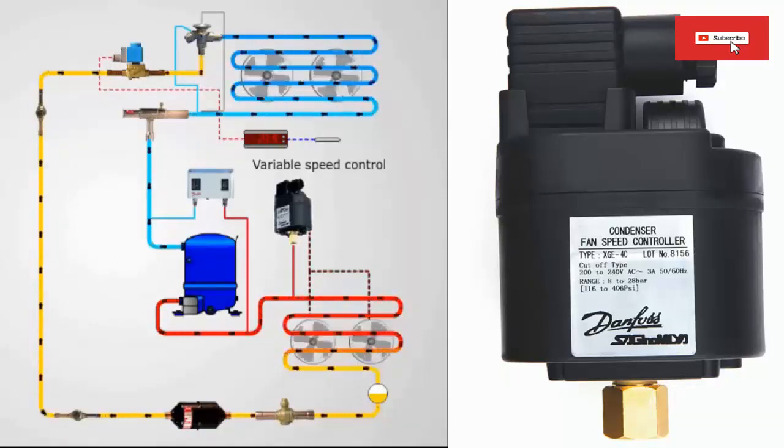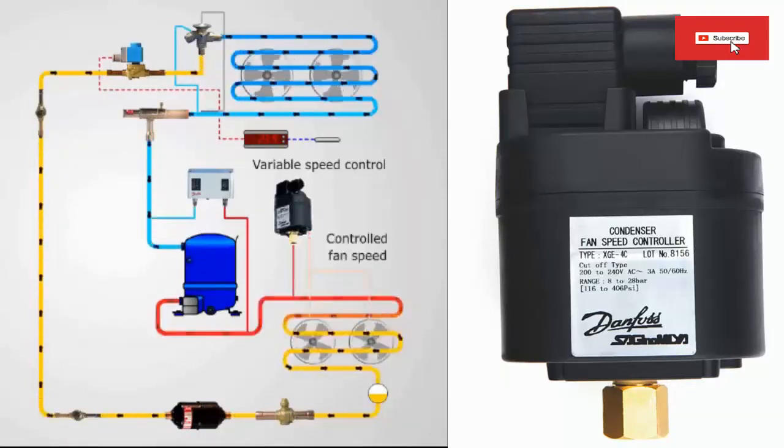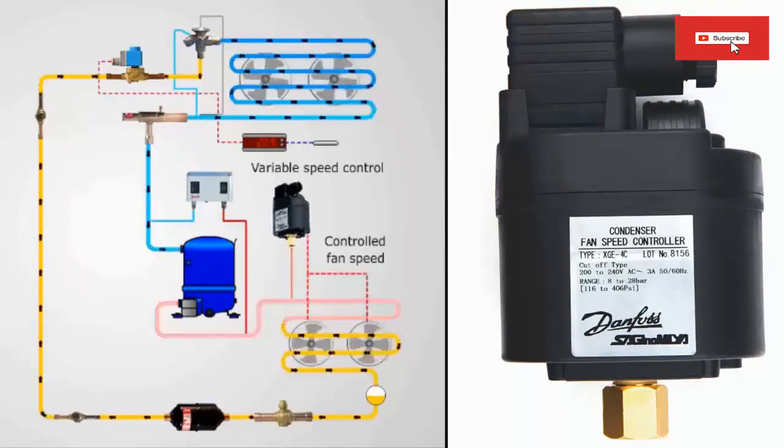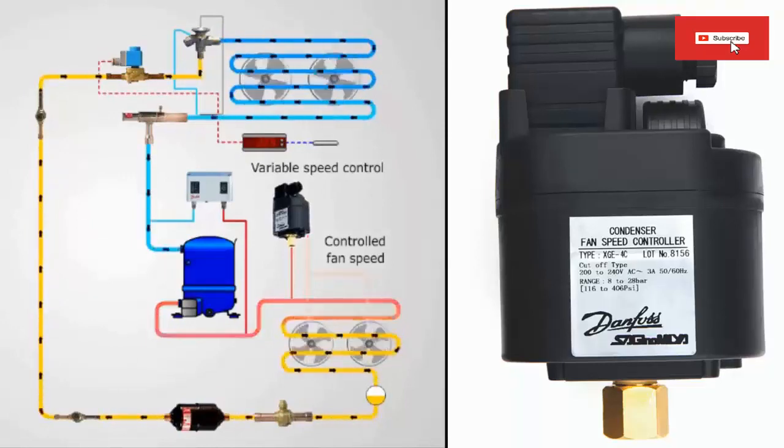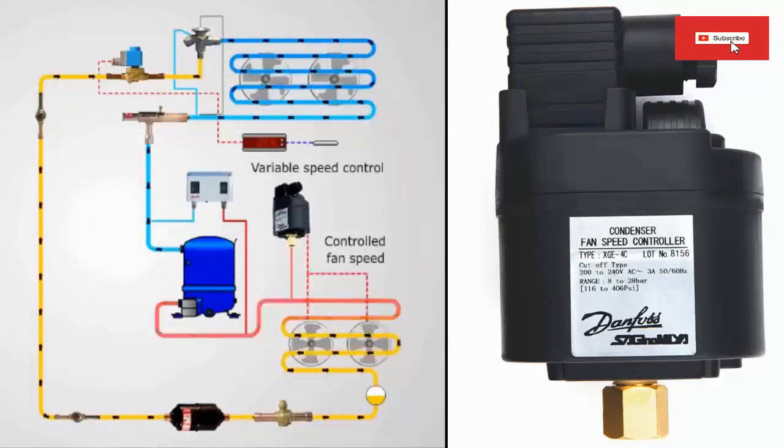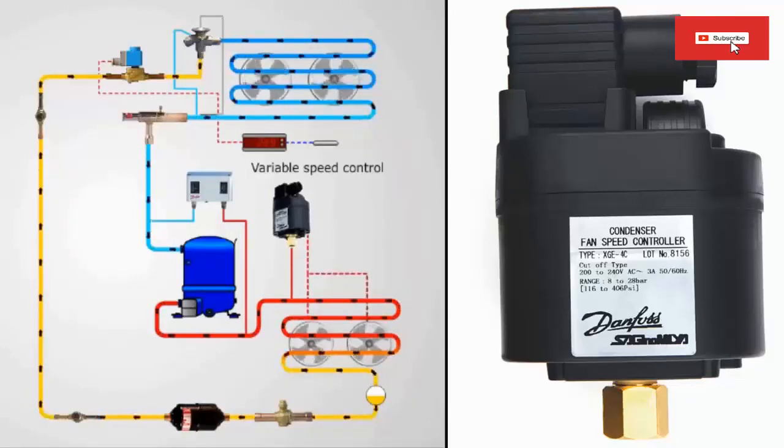1. Pressure Actuated Controllers are the most common type of VSC. They use a pressure sensor to monitor the pressure of the refrigerant in the system. When the pressure gets too high, the controller increases the fan speed.